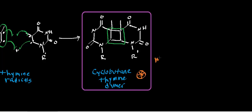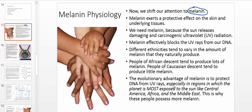This is a mutation. Now you do have enzymes to fix this, but wouldn't it be nice if you could prevent this from even happening in the first place? And to prevent this from happening in the first place - that's what ultimately leads us to melanin.